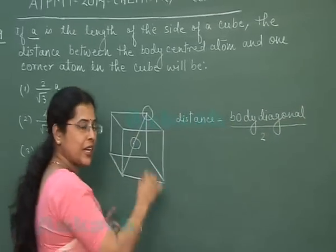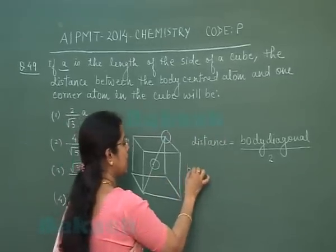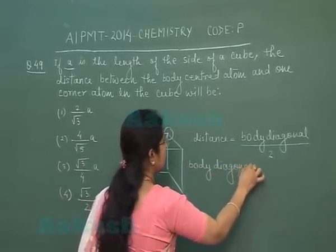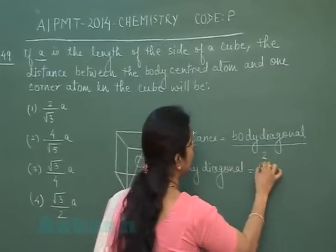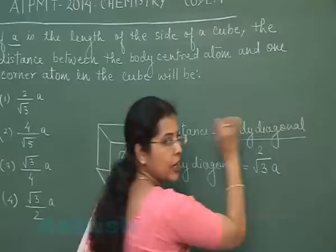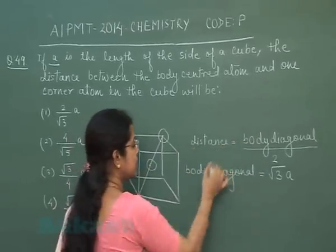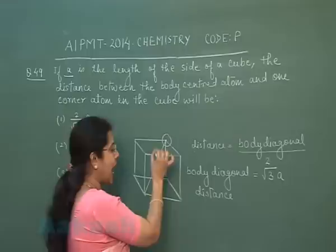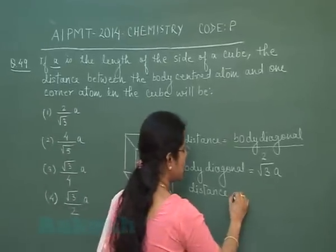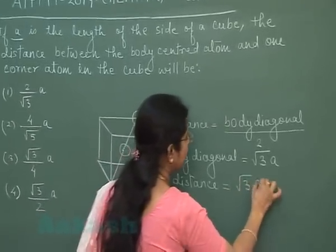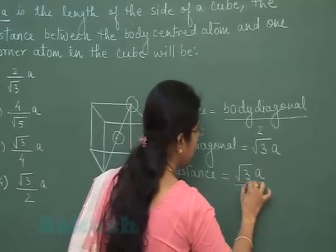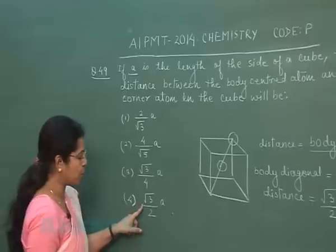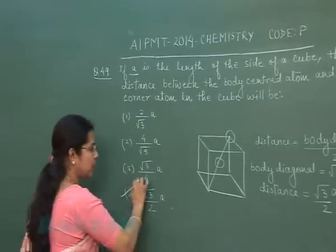For any cubic structure, the body diagonal is equal to √3a. It means the distance between two adjacent atoms at corner and body center positions should be √3a÷2. So our correct answer is the fourth option: √3a/2.